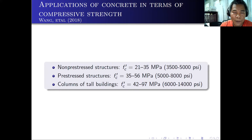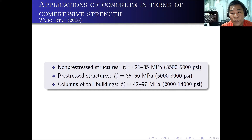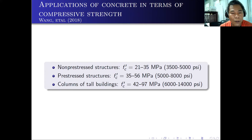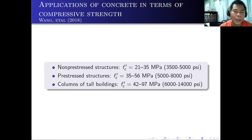We need to learn about the applications of concrete in terms of its compressive strength. Normally for non-prestressed structures, FC prime should range from 21 to 35 MPa, or in English units, that is 3,000 to 5,000 psi. Note that 21 MPa is equivalent to 3,000 psi. For prestressed structures, we use high strength concrete, so it ranges from 35 to 56 MPa. This is no longer easy to produce — you need to play with your ingredients and use admixtures. You can combine mineral and chemical admixtures to achieve these values, especially for columns of tall buildings with a very high compressive strength of 42 to 97 MPa.